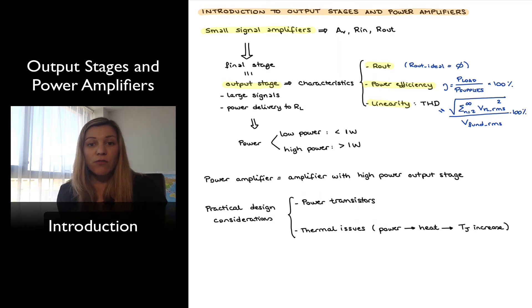In terms of power, output stages can be coarsely classified into low power or high power and roughly we say if we are dealing with less than one watt of power we consider that amplifier, the output stage, to be low power and if we are dealing with more than one watt of power we will consider that we are talking about a high power output stage or a high power amplifier.